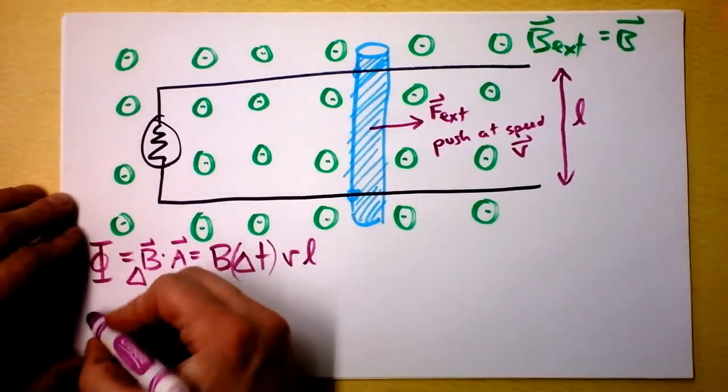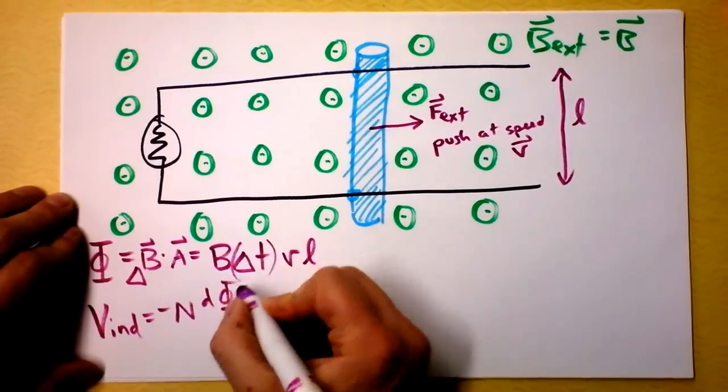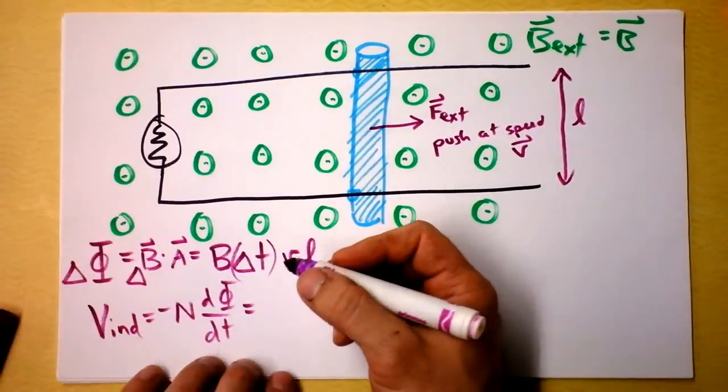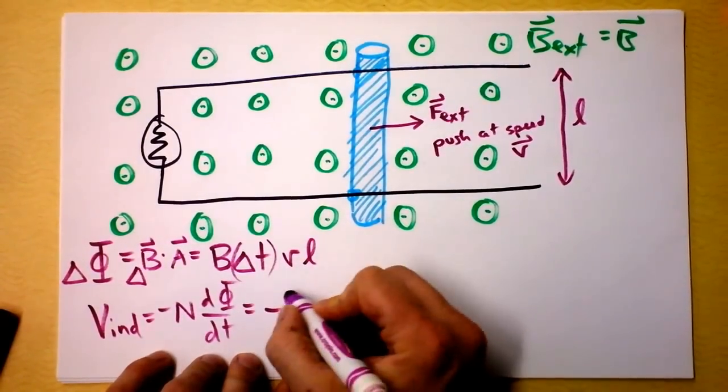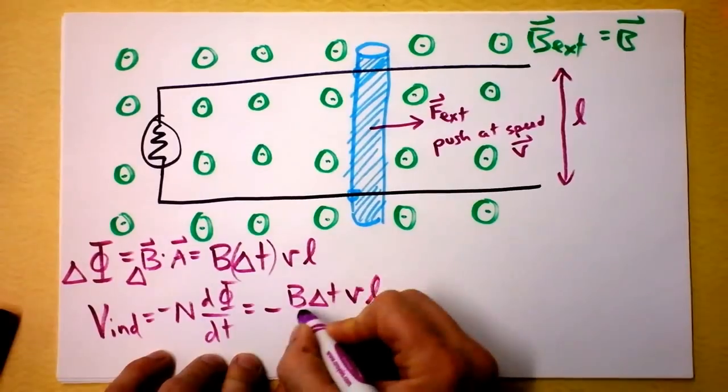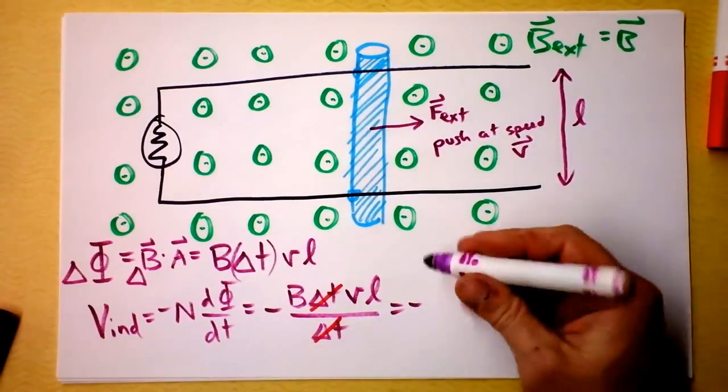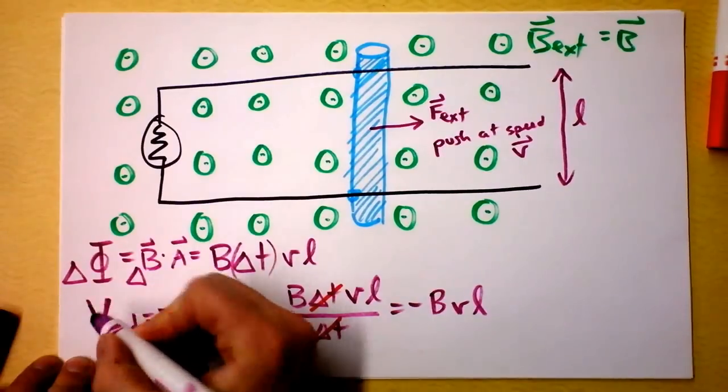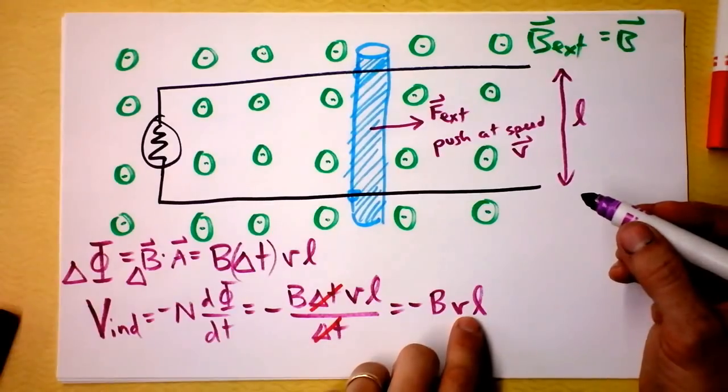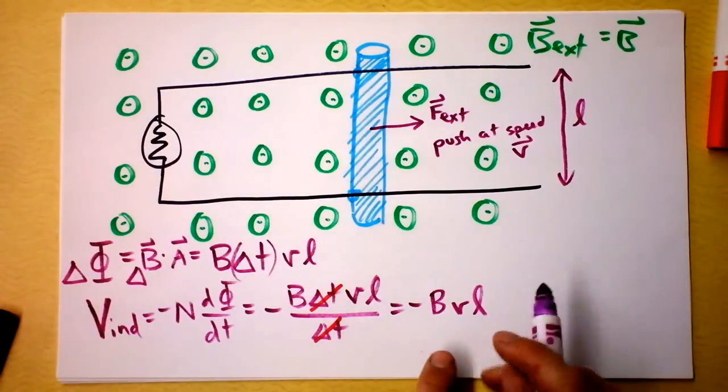Now I want to find the induced voltage and induced voltage is negative N times d phi dt. I'm just going to have negative B times delta T times V times L divided by delta T. The time comes out of the equation and we find that the induced voltage is B times V times L. Be careful in your notes - induced voltage needs to be a capital V and the velocity needs to be a lowercase v. So I like to put a little wing right there on those velocities.